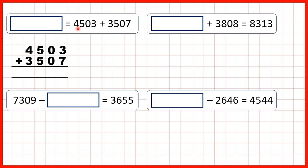We just need to add 4,503 and 3,507. So 3 plus 7 is 10 — that's 1, 0. 1 plus 0 plus 0 is 1. 5 plus 5 is 10 — so 1, 0. And 1 plus 4 plus 3 is 8, so we get 8,010.